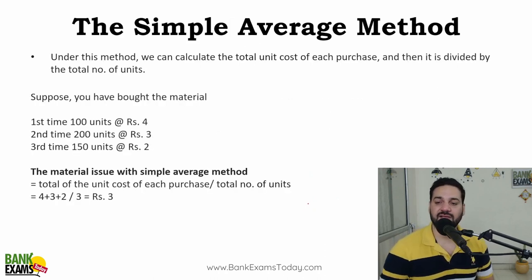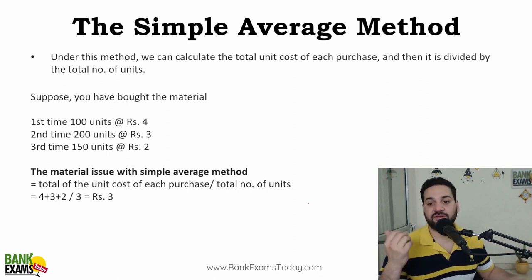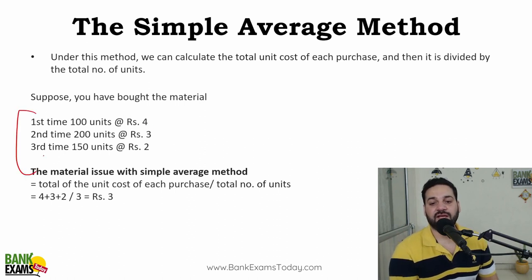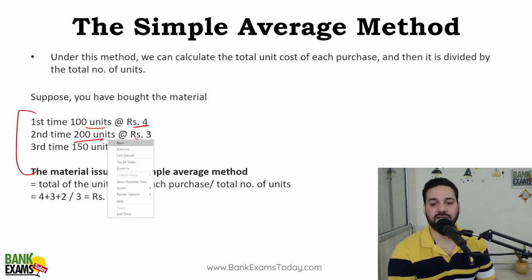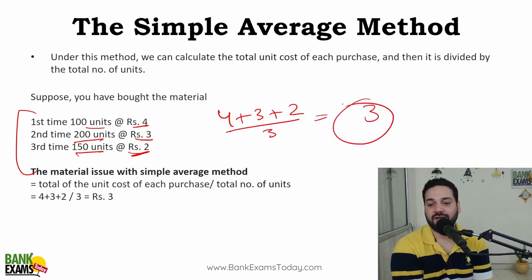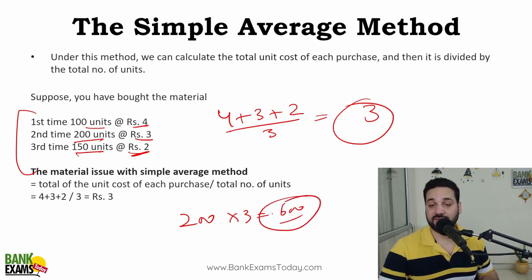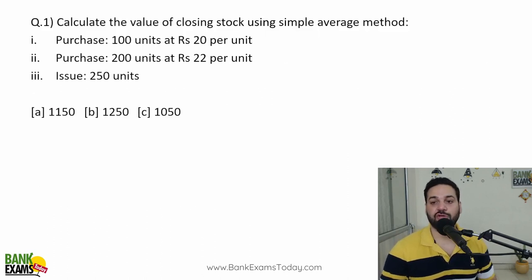The question asked in the exam was from the simple average method — not commonly used and very vague, but it was asked. For example: first time you bought 100 units at rupees 4, second time 200 units at rupees 3, third time 150 units at rupees 2. The simple average is simply (4 + 3 + 2) / 3 = rupees 3. That is your average cost. If there are 200 units in stock, the value is 600. This is the easiest method, not very practical, but it was asked in the exam.